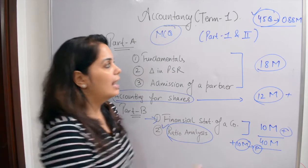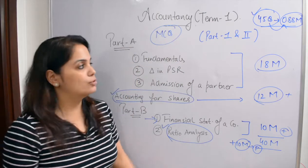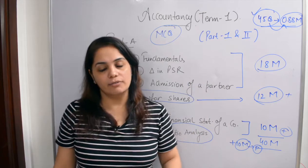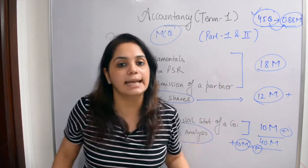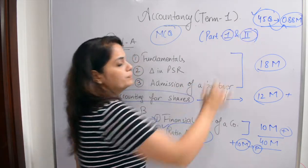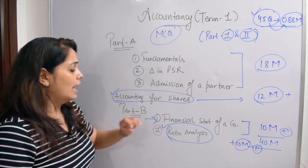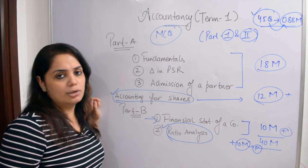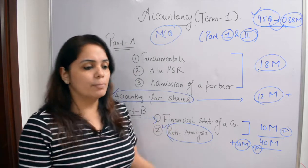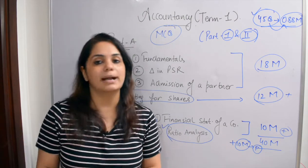So you have to solve 45 questions, and every question will be 0.88 marks. Your paper will be divided into Part 1 and Part 2. Part 3 is computerized accounting, which is optional — either you will do financial statements or computerized accounting. In Part 1 and Part 2, there are also internal options. I will tell you what options will be asked as per the new CBSE syllabus and pattern.